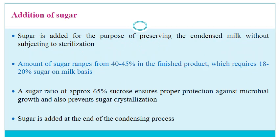The next step is addition of sugar. Sugar is added for the purpose of preserving the condensed milk without subjecting it to sterilization. The amount of sugar ranges from 40 to 45% in the finished product, which requires 18 to 20% sugar on a milk basis. A sugar ratio of approximately 65% sucrose ensures proper protection against microbial growth and also prevents sugar crystallization.